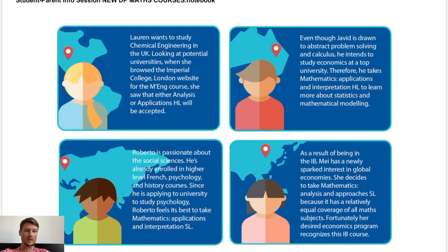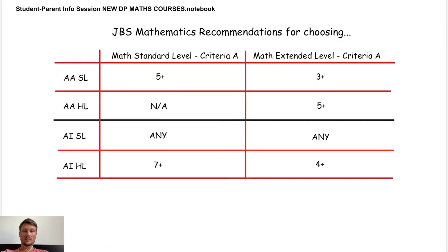May has a newly sparked interest in global economies and decides to take Math AA SL because it has relatively equal coverage of all topics at an equal weight, and she has checked that economics programs at her chosen university recognize that course.